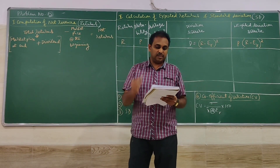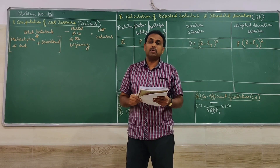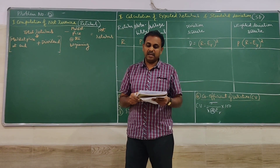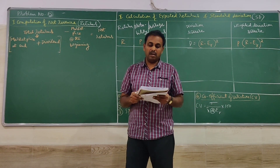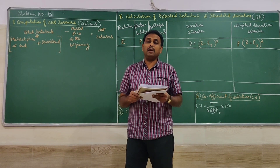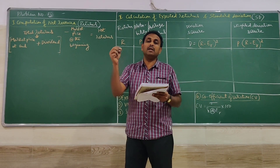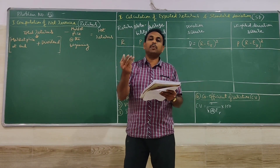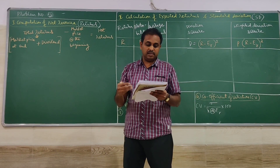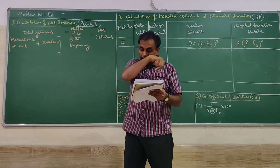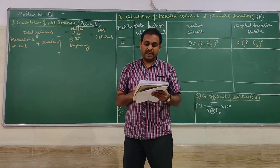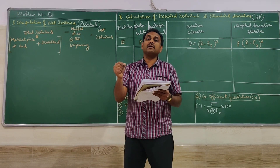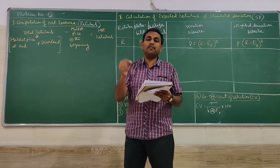Problem number five, similar to the previous one. An equity share is priced at rupees 50. The price at the end of the year and the probabilities are given. The company does not pay any dividend — underline that, it is the most important point. The questions are: first, what is the return that an investor can expect from this stock? Second, analyze the standard deviation of the return. Third, calculate the coefficient of variation (CV).